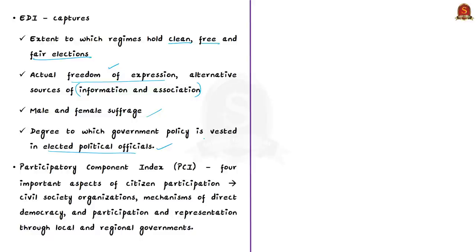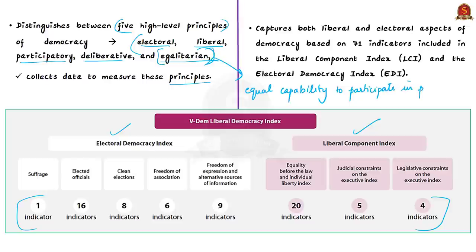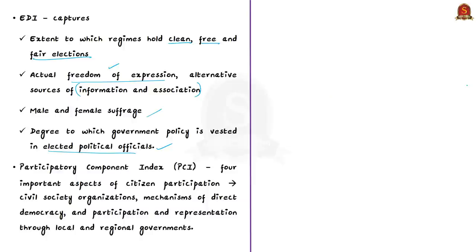The egalitarian principle of democracy measures to what extent all social groups enjoy equal capabilities to participate in the political arena. It relies on the idea that democracy is a system of rule by the people, where citizens participate by making informed voting decisions, by expressing opinions, and by demonstrating. The participatory principle emphasizes active participation by citizens in all political processes, including both electoral and non-electoral processes, preferring direct rule by citizens as practicable.